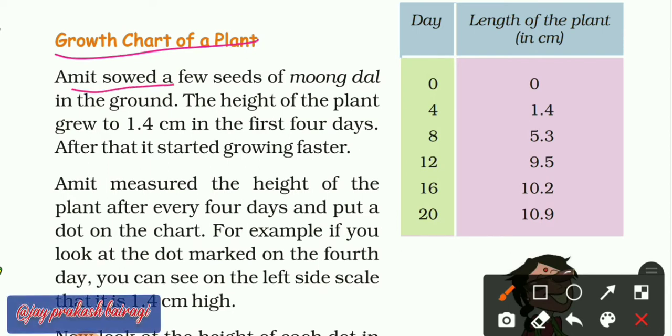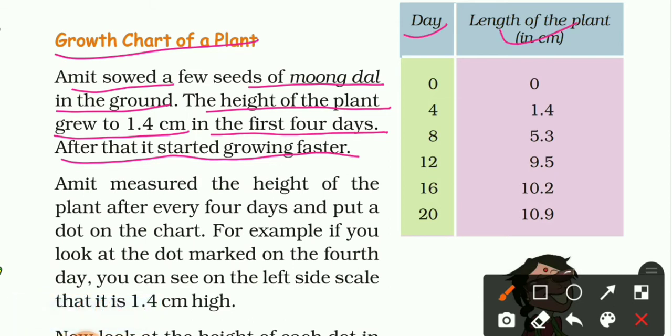Amit sowed a few seeds of moong dal in the ground. The height of the plant grew to 1.4 centimeter in the first four days. After that it started growing faster. Here is the table: days and length in centimeter. In first four days its growth was 1.4 centimeter, in next eight days it was 5.3 centimeter, and so on.